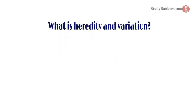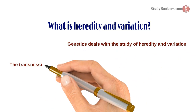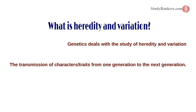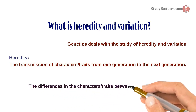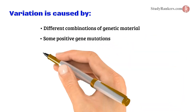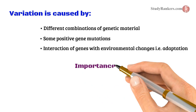The very first thing that comes to our mind before starting the chapter is: What is heredity and variation? As we know, genetics deals with the study of heredity and variation. The transmission of characters or traits from one generation to the next generation is called heredity. The differences in the characters or traits between the parent and offspring is called variation. Variation is caused by different combinations of genetic material, some positive gene mutations, and interaction of gene with environmental changes, i.e., adaptation.